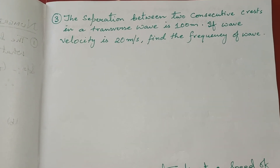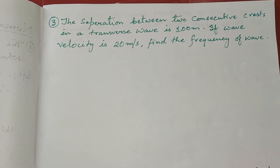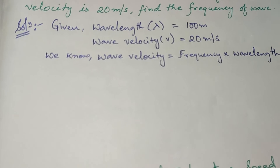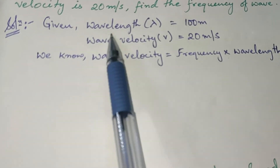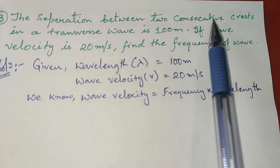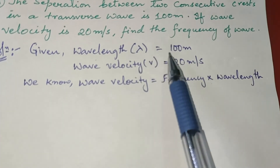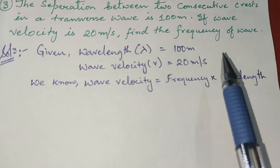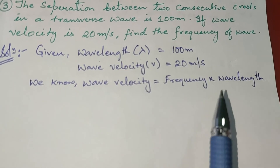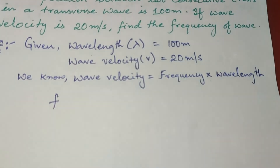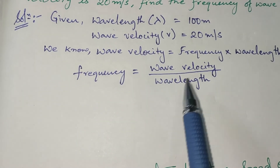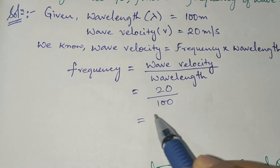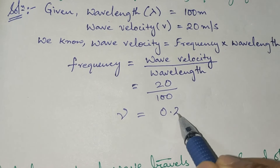The third question says the separation between two consecutive crests in a transverse wave is 100 meters. If the wave velocity is 20 meters per second, find the frequency. The distance between two consecutive crests is the wavelength, so wavelength λ = 100 m and wave velocity = 20 m/s. Using wave velocity = frequency × wavelength, frequency ν = wave velocity ÷ wavelength = 20 ÷ 100 = 0.2 hertz.